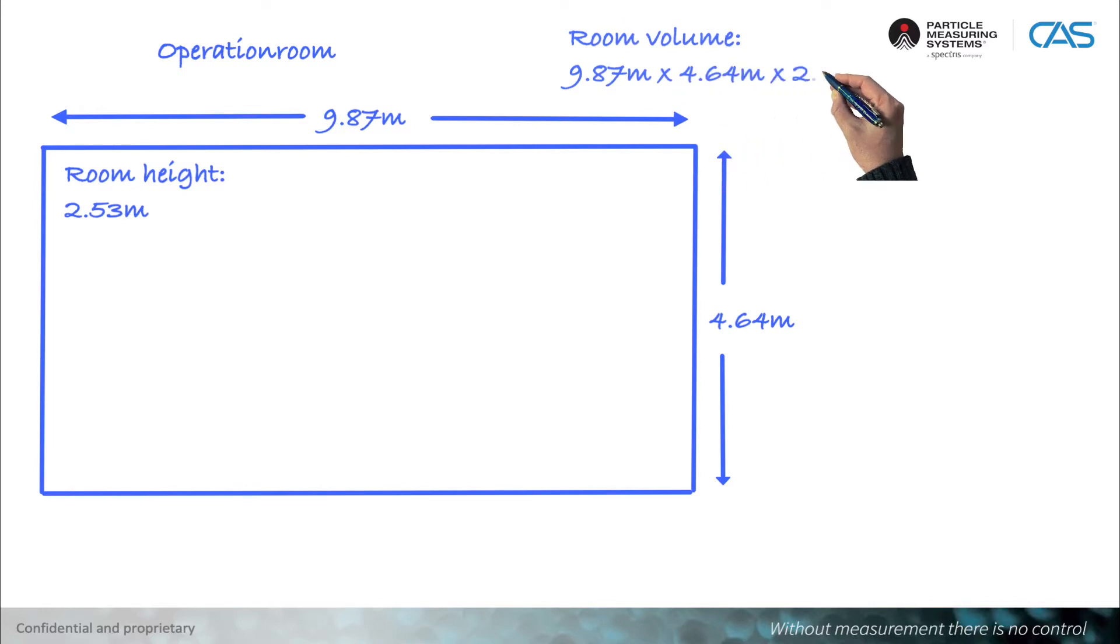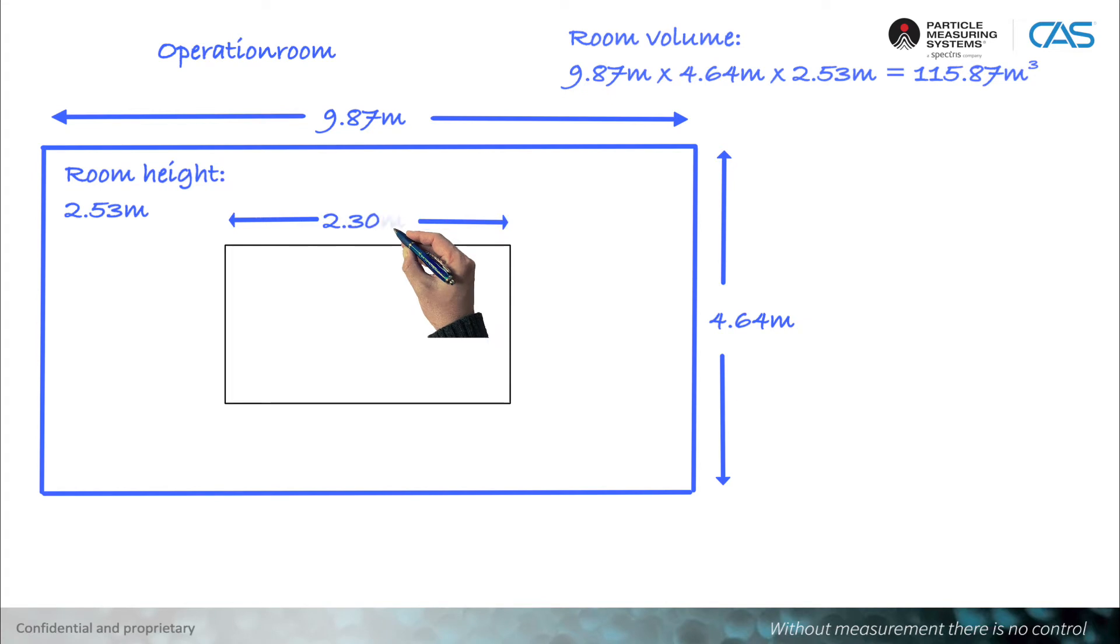Now, we turn to the air outlet element, in this case, a laminar flow. The size of the outlet element must be determined in order to be able to determine the required number of measuring points.